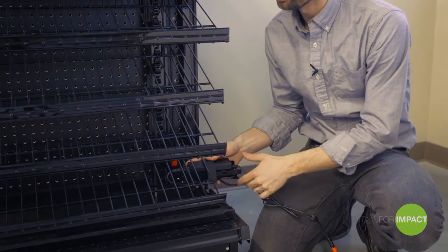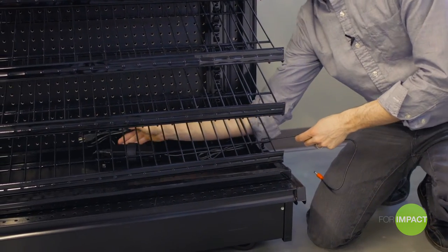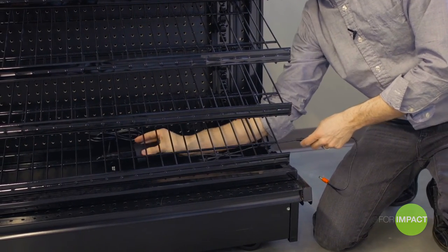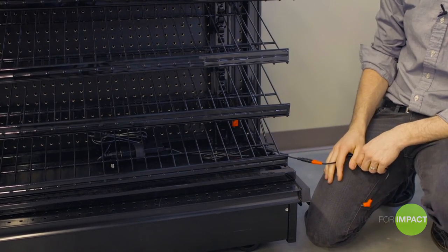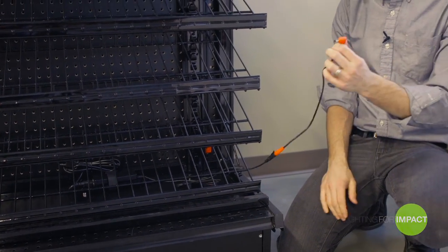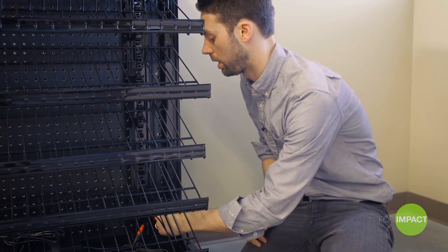Slide it up under the bottom shelf of your fixture. The magnets are very strong and will secure the power strip, the power transformer, so it will not shift. Take the right angle end and plug it into the power input connector.